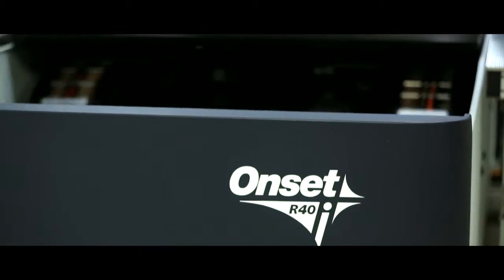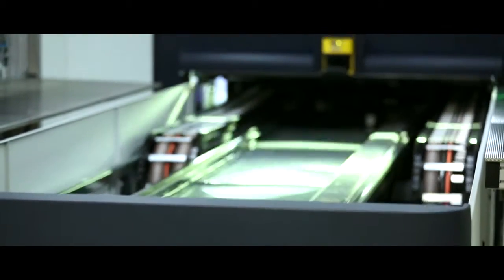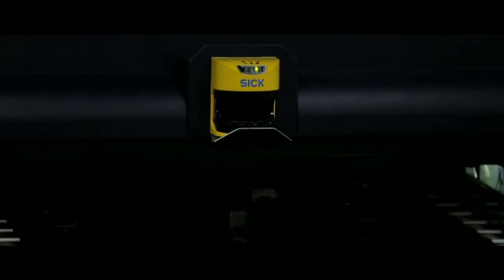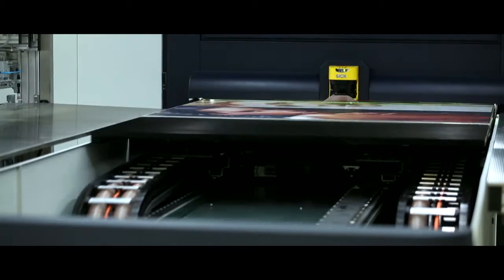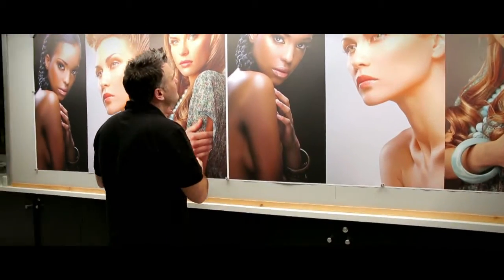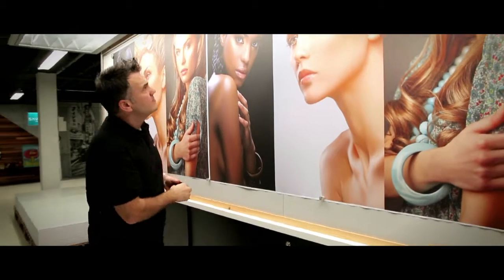Full-width array is fundamentally a different approach to printing rather than creating an image by moving the print head backwards and forwards. With the Onset, we have a print head system which is the full width of the paper. Therefore, as we move the paper under, we print the entire image at the same time.